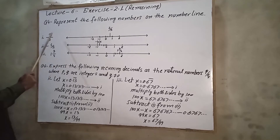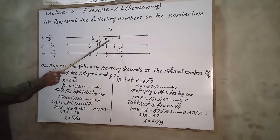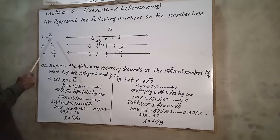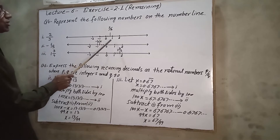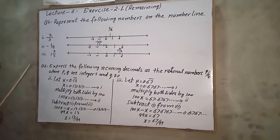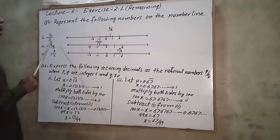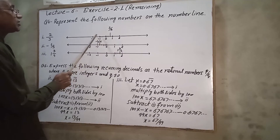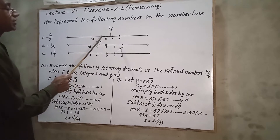We will pick up number 2/3. Since 2/3 is less than 1 and a positive number, we will look for it between 0 and 1 on the number line. 2 by 3 means 2 out of 3. We need equal distance between 0 and 1.